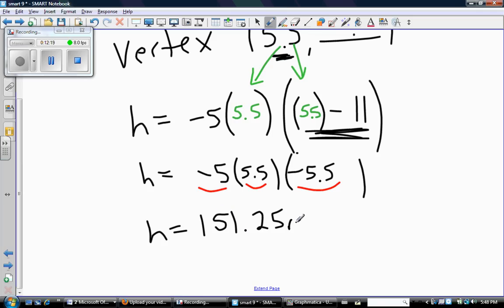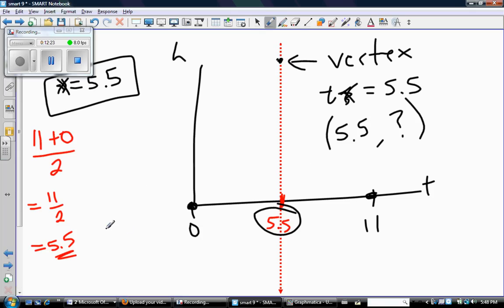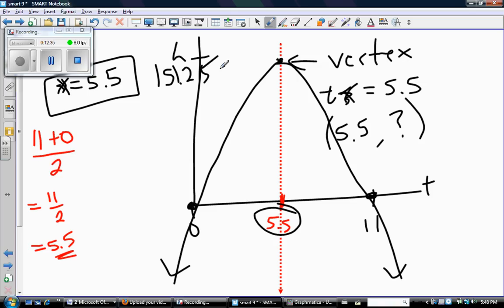If we think about our sketch again, now I know my parabola does this. This point would be that value I just found, 151.25. I knew already that it went down because the a value was negative. So now that I have this information, I can try to draw a pretty decent sketch.